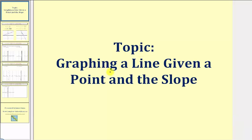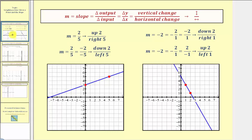Welcome to a lesson on graphing a line given a point and the slope. To understand how this works, let's review the definition of slope. Slope is equal to the ratio of the change in output to the change in input, or the ratio of the change in y to the change in x.